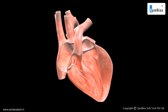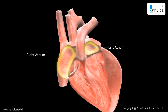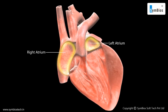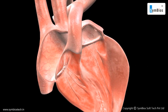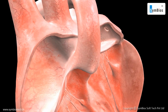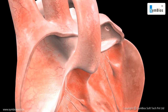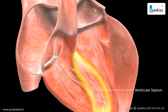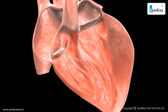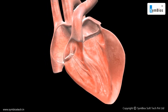The heart has four chambers. The right and left atria are separated by a thin muscular wall called the interatrial septum, whereas the right and left ventricles are separated by a thick wall called the interventricular septum. These chambers prevent oxygenated blood from mixing with deoxygenated, oxygen-poor blood.